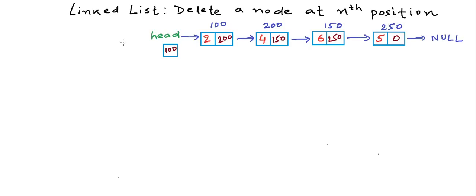So once again I have drawn a linked list here. We have 4 nodes in this list at addresses 100, 200, 150, and 250 respectively. This is my example of a linked list of integers and we number the positions on a one-based index. This is the first node, this is the second node, this is the third node, and this is the fourth node.